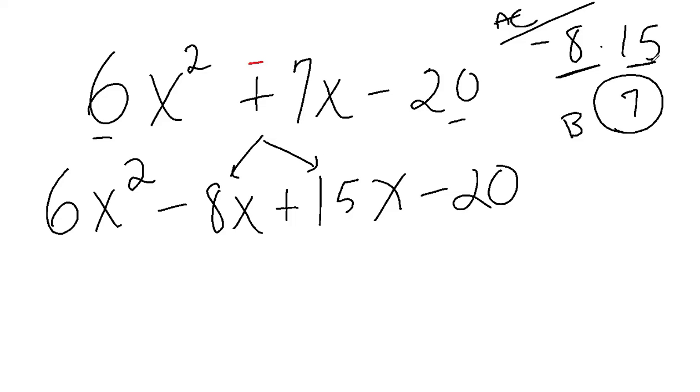Now I factor by grouping. I group the first two and the last two, and I bring down the middle sign. So I take out a 2x, and that gives me 3x minus 4, and I take out a 5,